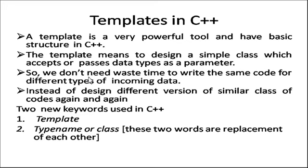Two types of keywords are used in C++. First is 'template', second is 'typename' — or we can use 'class' as a replacement. So in older times, or earlier, we were using the 'class' keyword name.